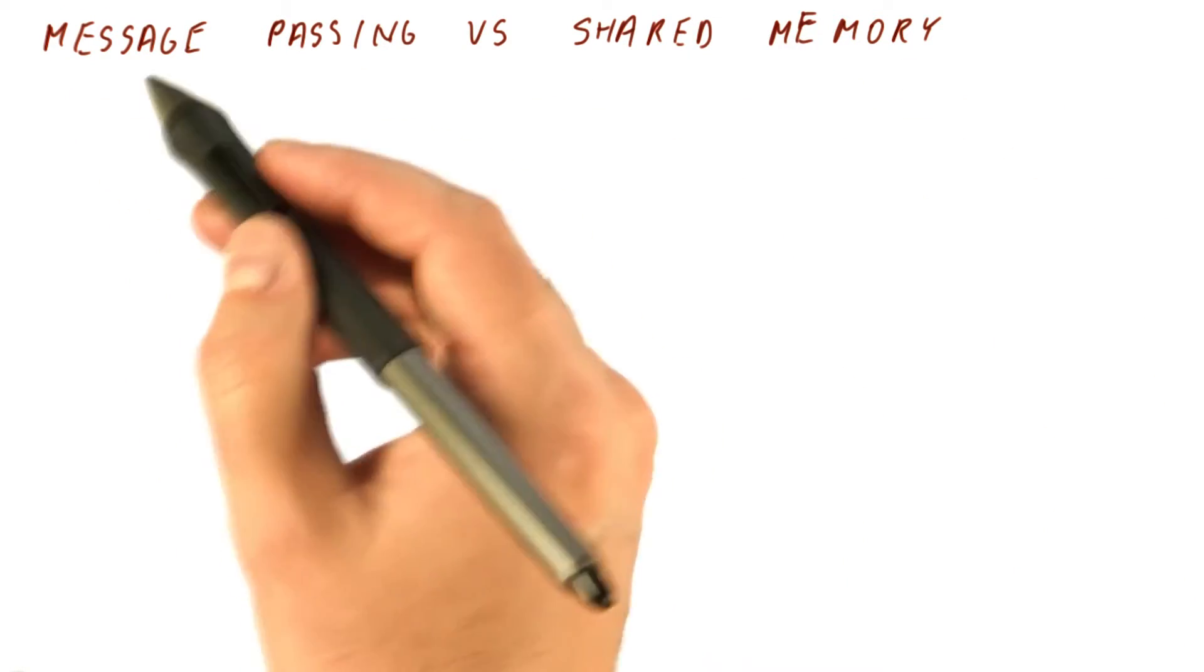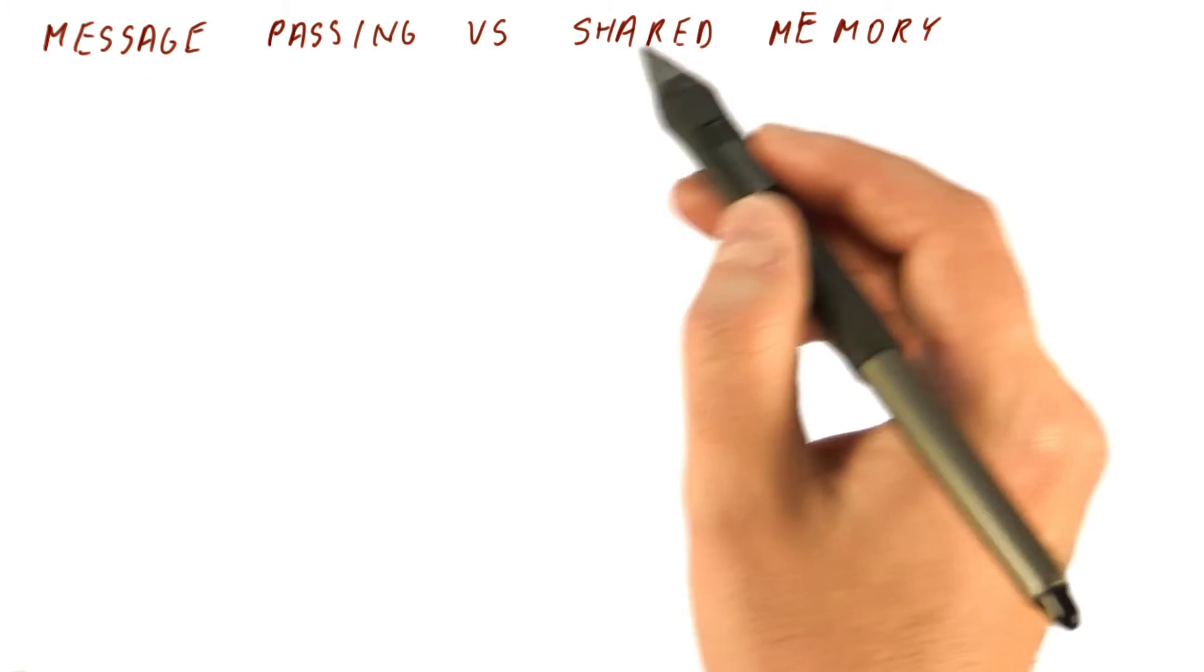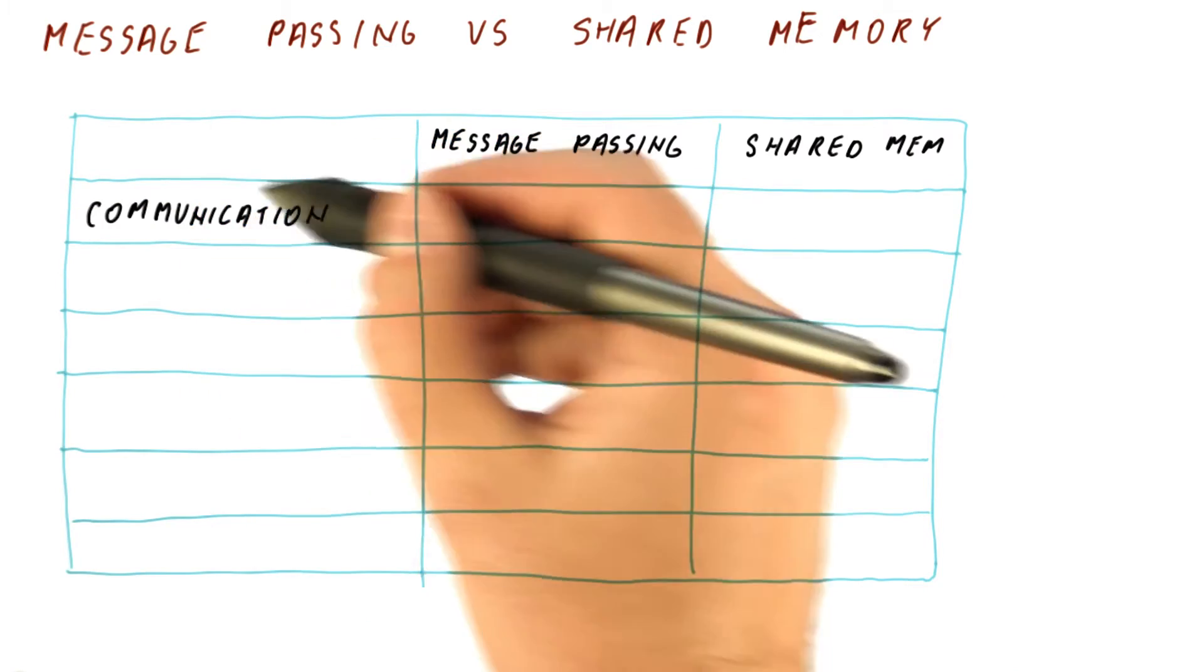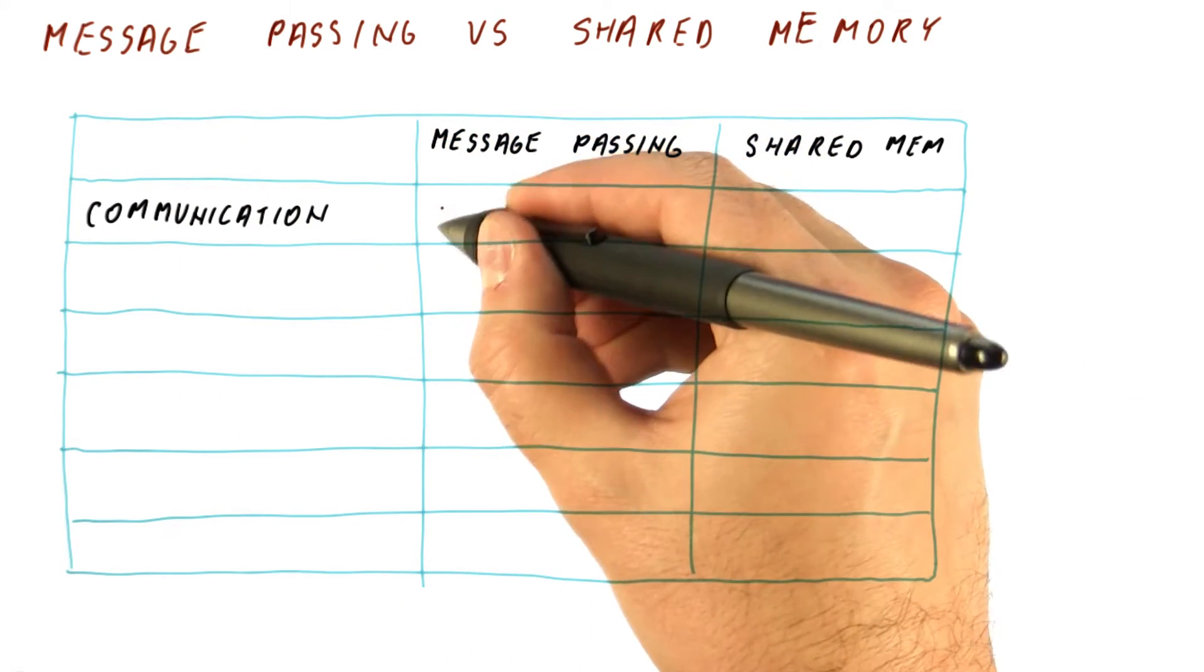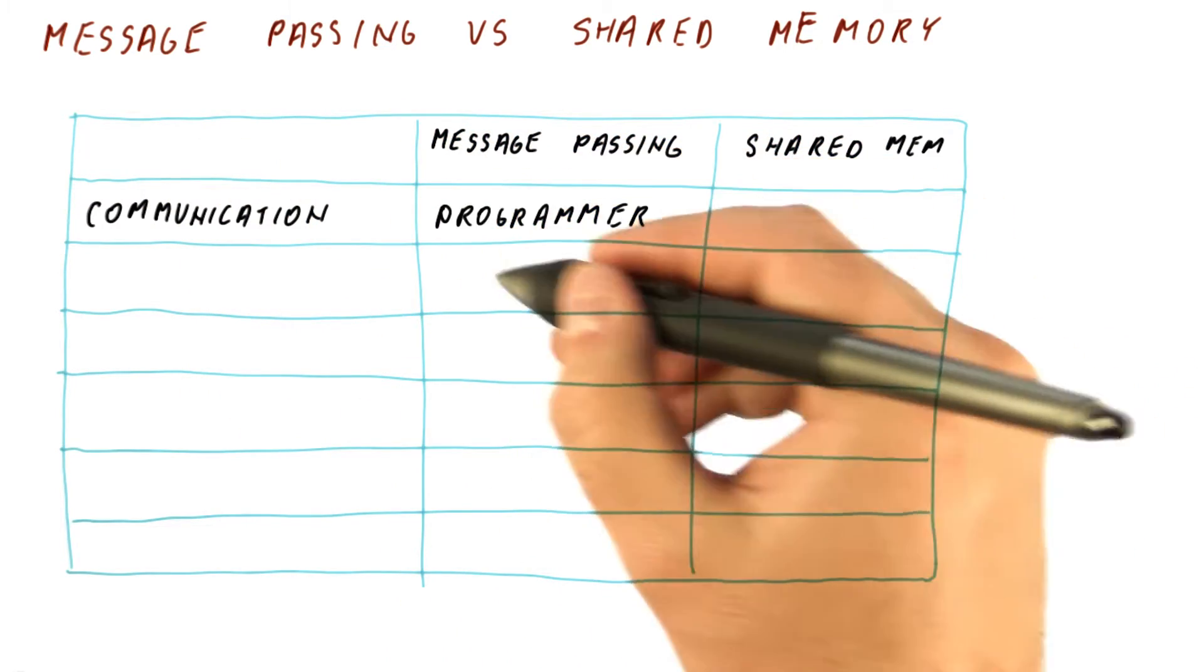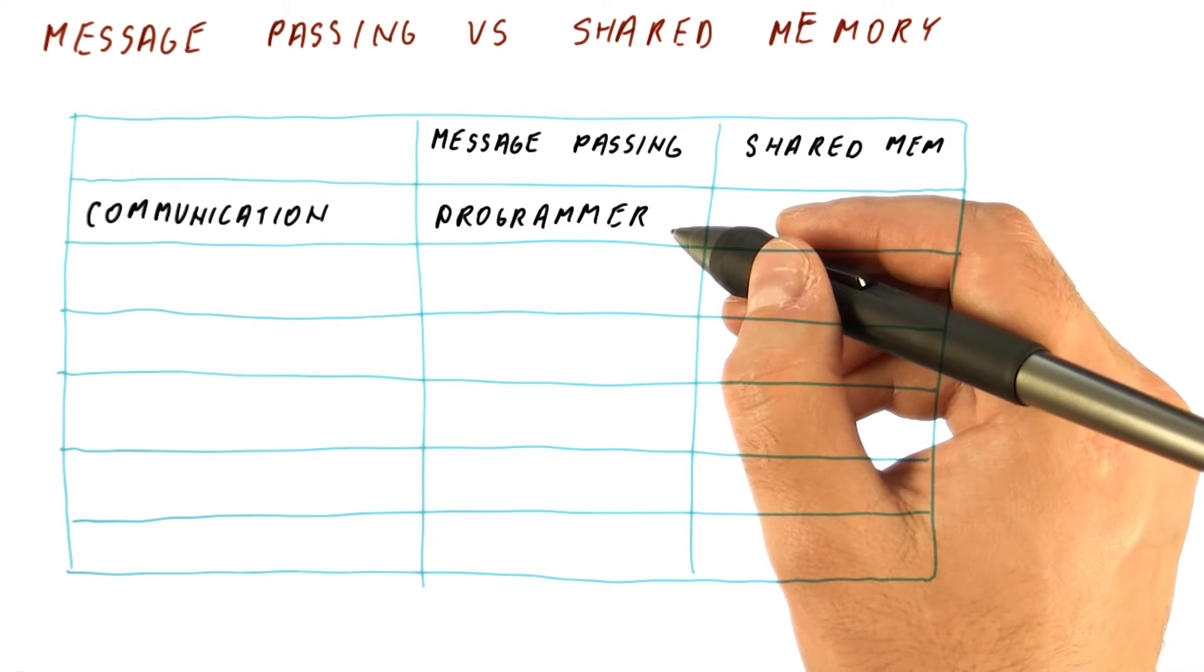So let's summarize the differences between message passing and shared memory. Regarding who does communication, in message passing, the programmer is responsible for figuring out who sends and who receives the data.